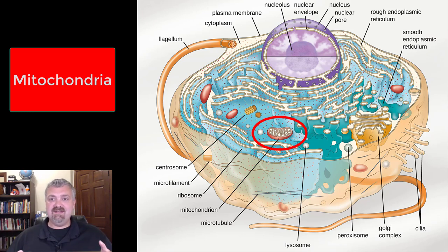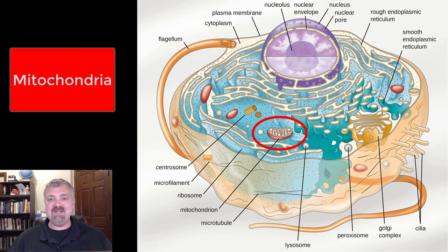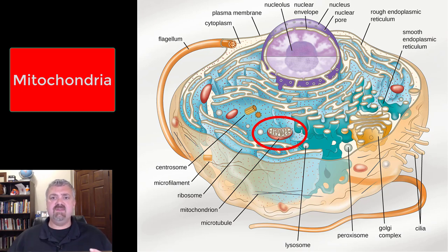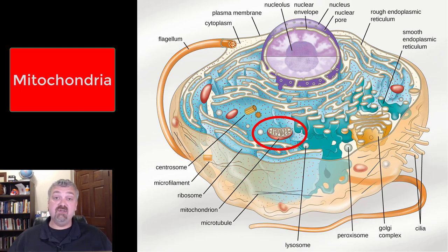Seeing a single mitochondria here is not going to happen very often. There are some cells that don't have mitochondria, like red blood cells, and you could actually argue they're not even cells — we'll cover that when we get to blood. But for example, your heart muscle cells, 30% of the volume of the cell is going to be mitochondria. The amount of mitochondria in a cell tells you how much energy it needs to produce and use.